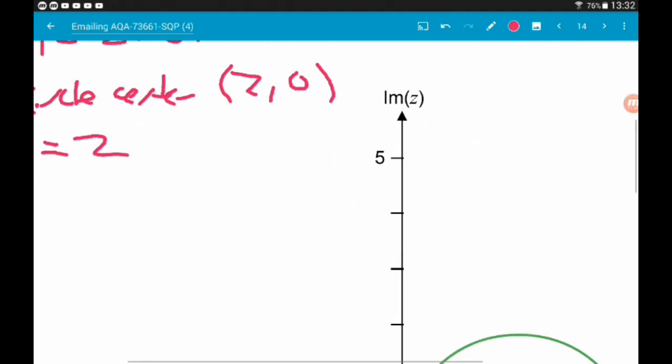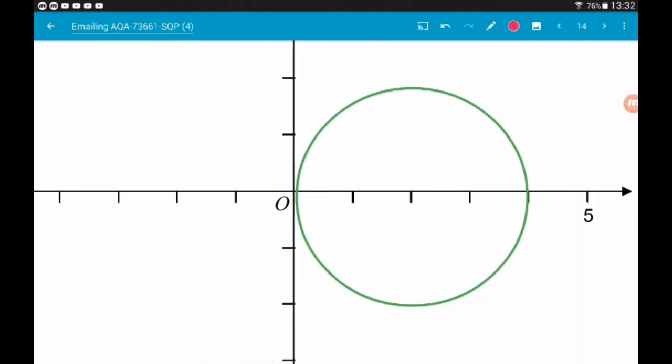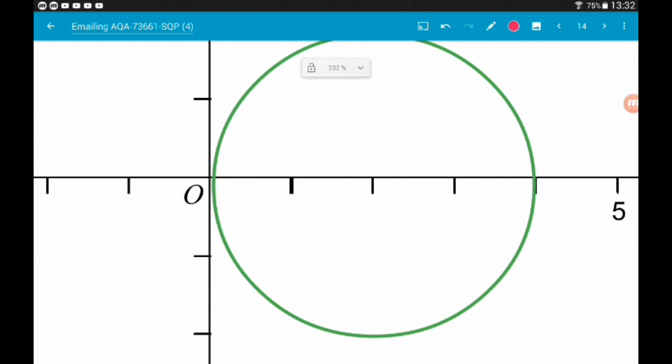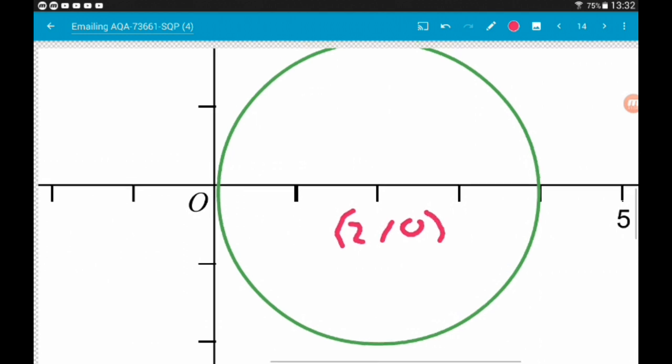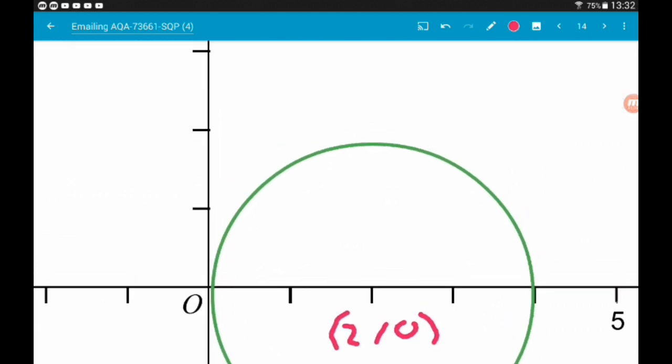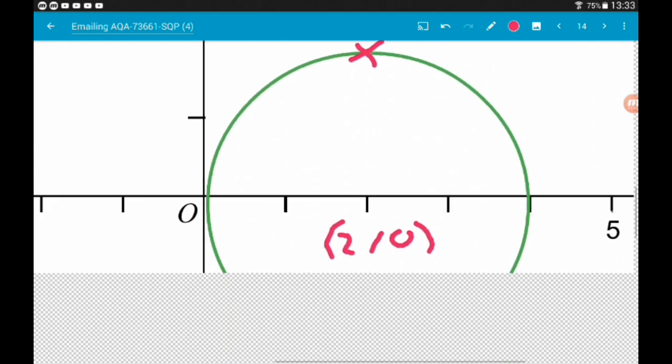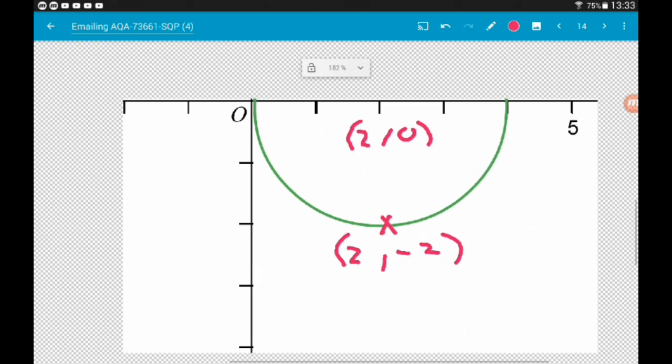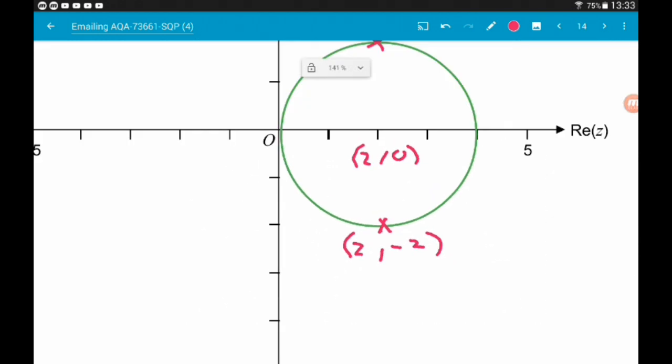That's gonna look something like this. Here's our centre at 2, 0. Might be a good idea to label this point up here above. So that's gonna be 2, 2, and then this one down below is gonna be 2 minus 2. There we go. Jobs are good for part A.